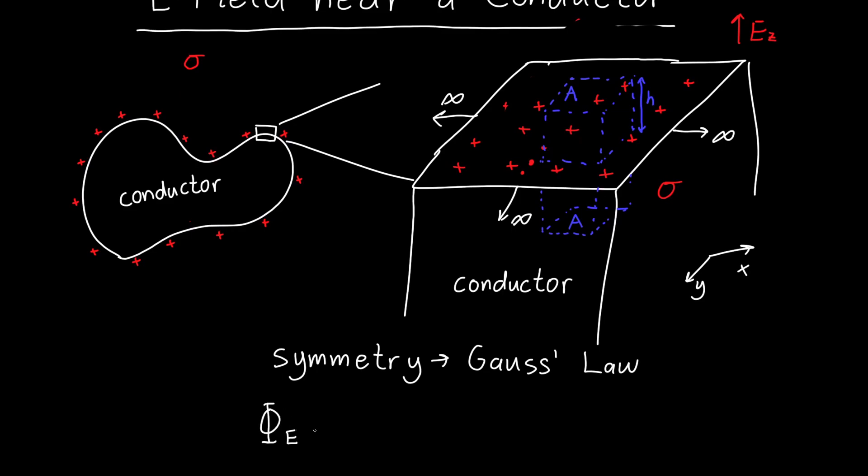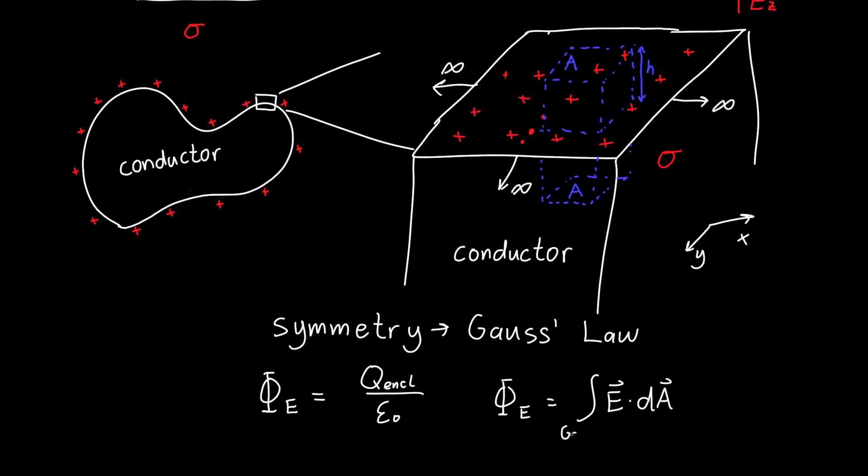we know that the electric flux is just equal to the enclosed charge divided by epsilon naught. And so this is how we figure out what the electric field is. And recall that the electric flux is just the integral of the electric field leaving our Gaussian surface, so the integral over the surface of our, the electric field that's pointing outward.